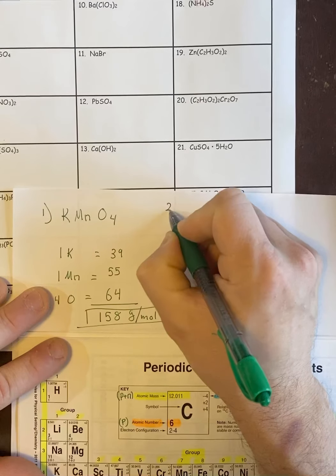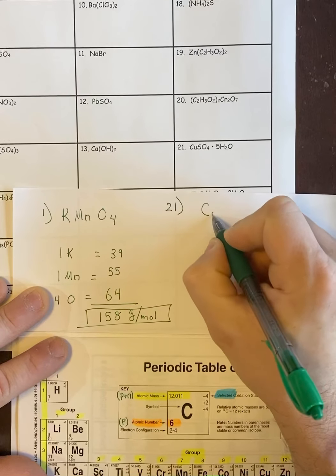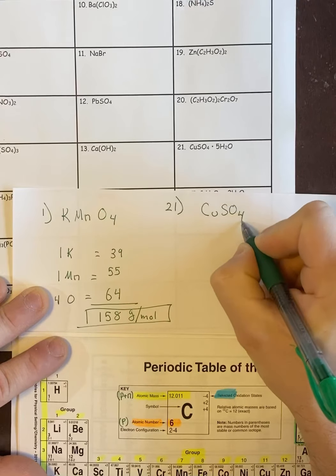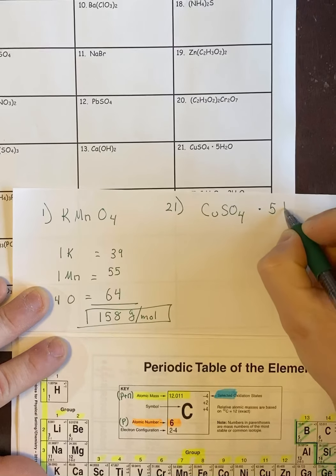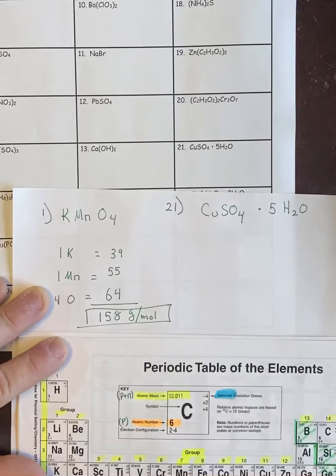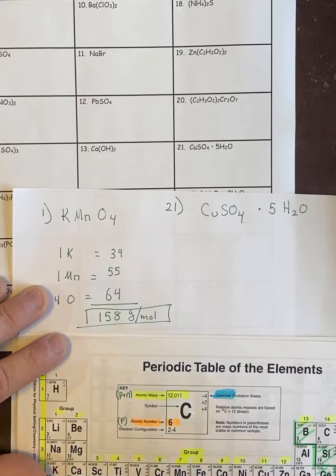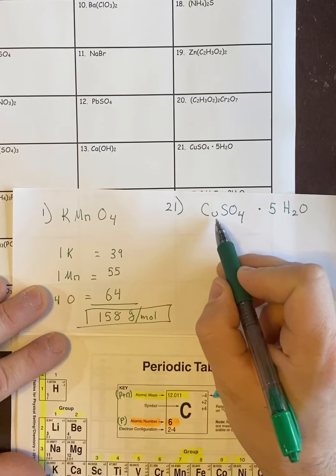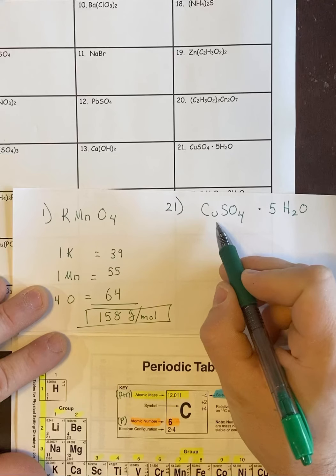So this would be number 21. It's CuSO4·5H2O. So what this means is that you had five water molecules get trapped or stuck to a CuSO4 molecule.